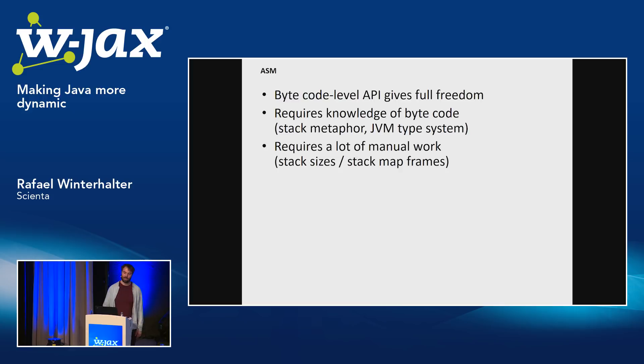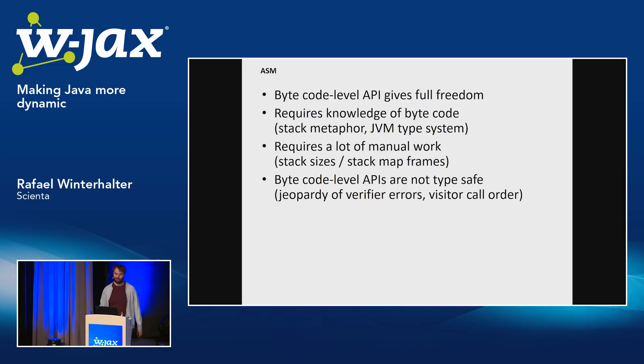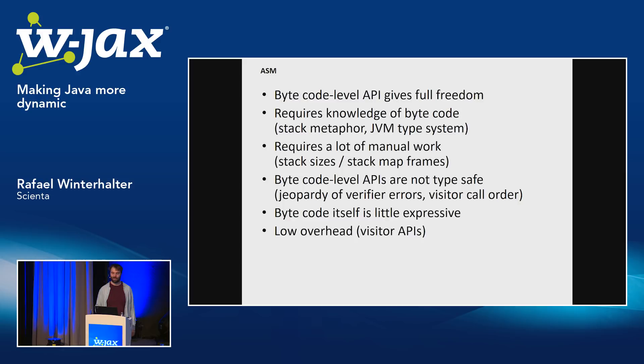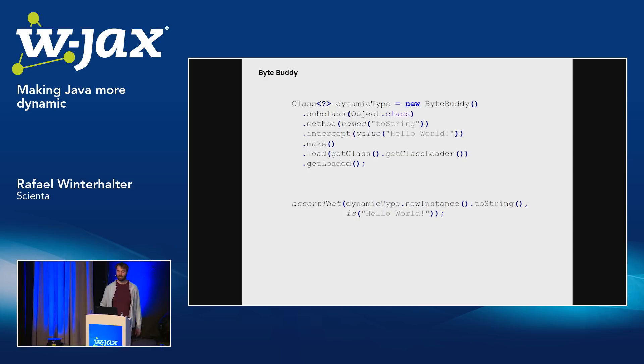ASM requires you to compute stack sizes for the operand stack. Since Java 6, you have to do stack map frame computation, which is expensive and tedious. Ironically, bytecode-level APIs are not typed at all. If you have the IRETURN statement just a few lines too high up, you will not get an error — you will just return too early with the value that's on top of the stack. You might not even notice that. There are really a lot of things that can go wrong, which is why I don't typically recommend ASM unless you have a need for it that is really low level.